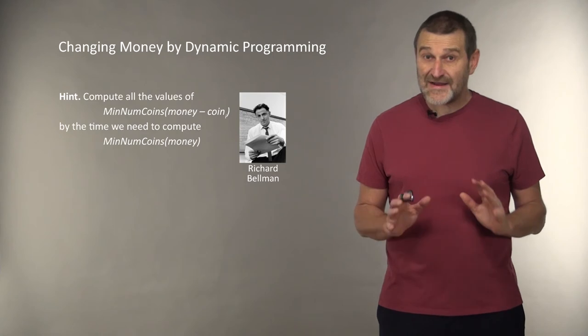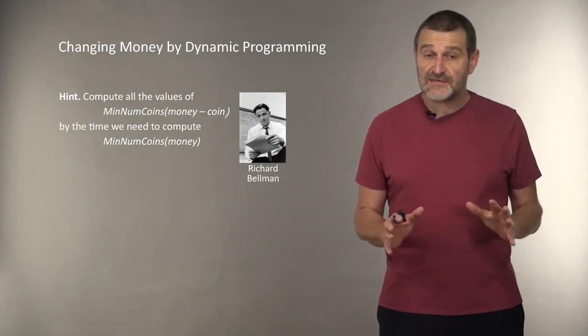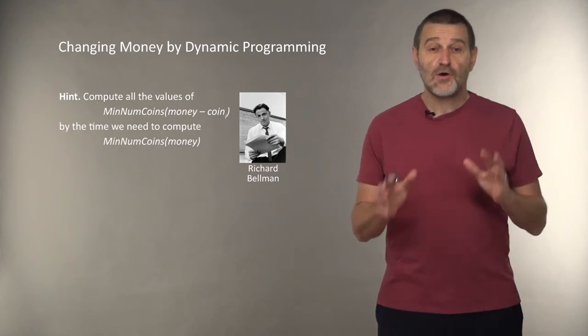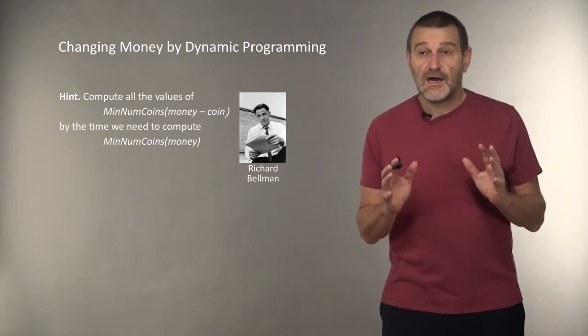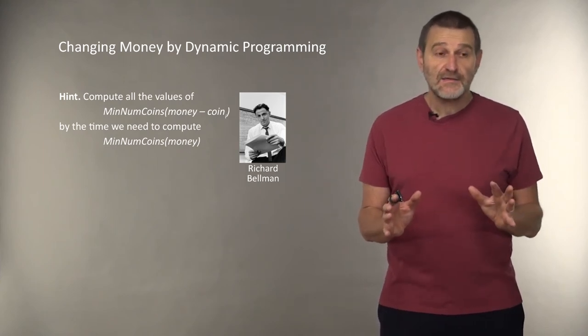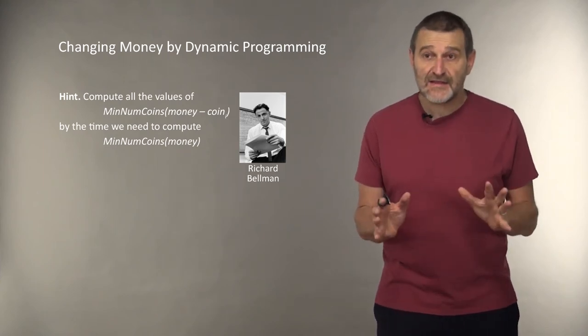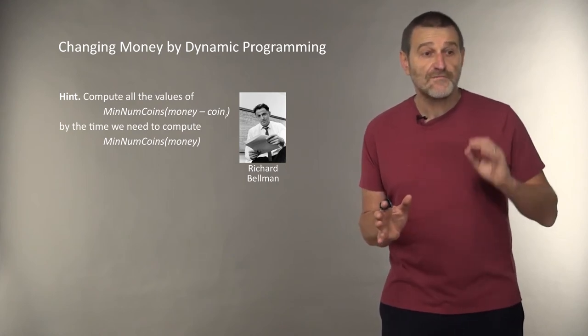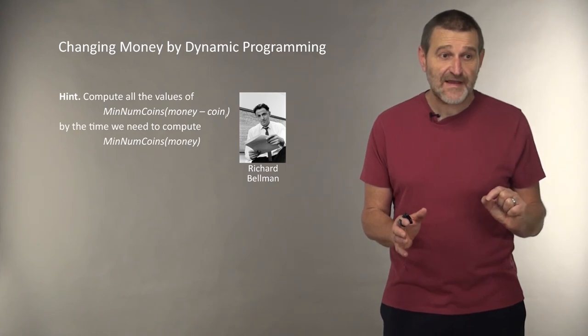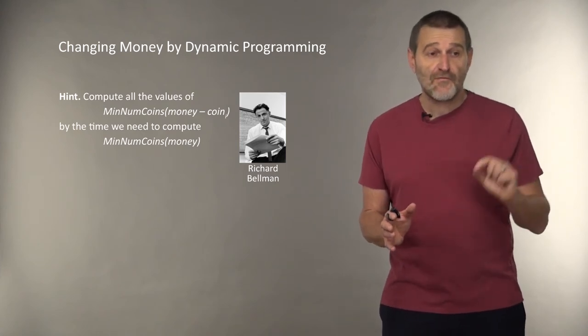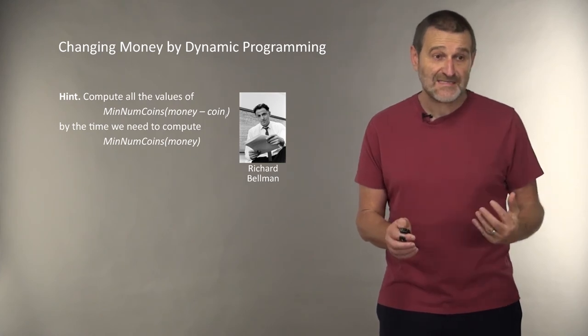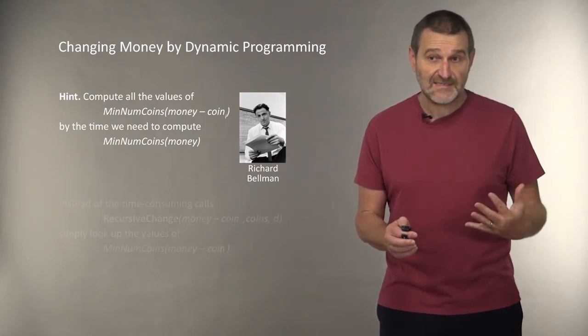Instead of changing money greedily, let's try something different. Wouldn't it be wonderful to compute all the values, minimum number of coins for money minus coin i, all the values that we need to compute the minimum number of coins for the amount of money. If we pre-computed all these values, then computing the minimum number of coins for a given amount of money would be a simple exercise and very fast exercise.